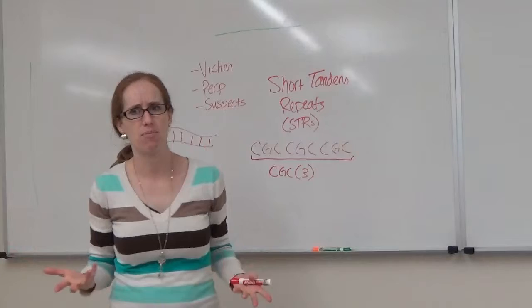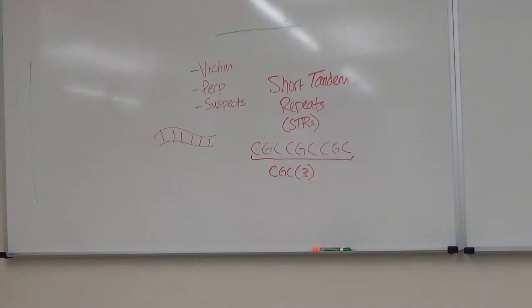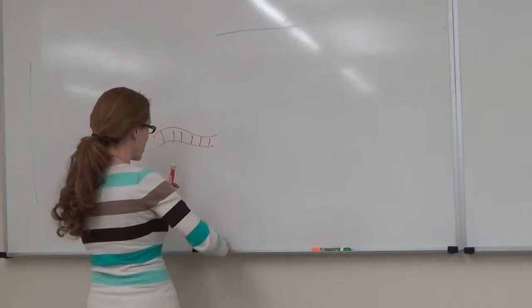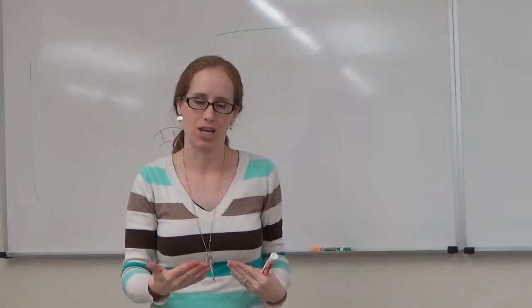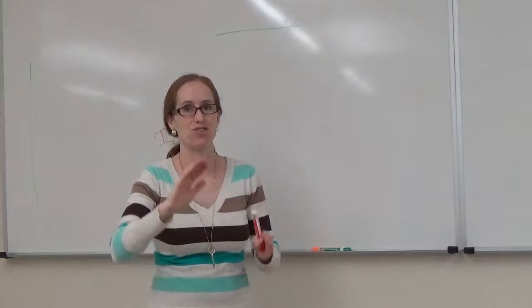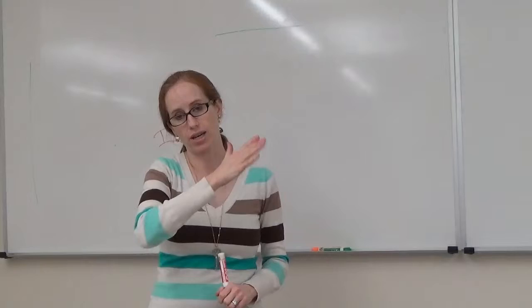So to test them, the Meselson and Stahl experiment. So they grew a parental line all in heavy nitrogen. And then they transferred the cells into normal nitrogen, lighter nitrogen, and they let it go through one round of DNA replication. And then they kept it in the light nitrogen. They let it go through a second round. So that's your first generation and your second generation on that graph. So you can see if it's conservative, what it would look like. If it's semi-conservative, what it would look like. And if it's dispersive, what it would look like.